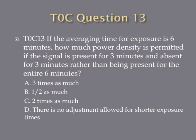Question thirteen. If the averaging time for exposure is six minutes, how much power density is permitted if the signal is present for three minutes and absent for three minutes, rather than being present for the entire six minutes? A, three times as much. B, one half as much. C, two times as much. Or D, there is no adjustment allowed for shorter exposure times?